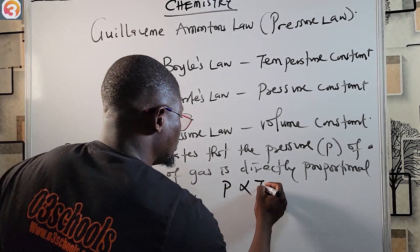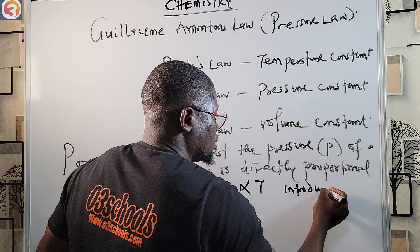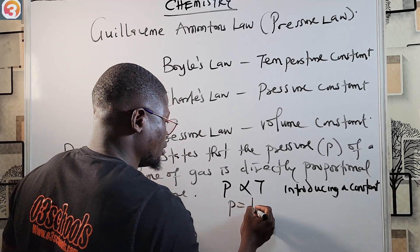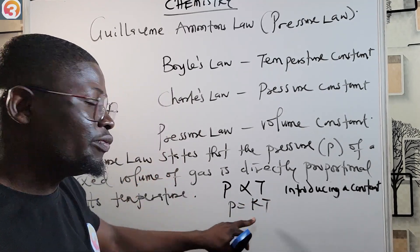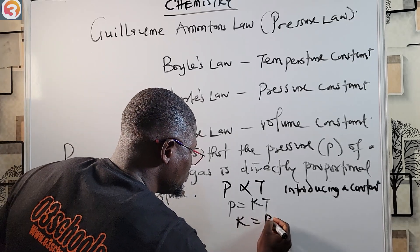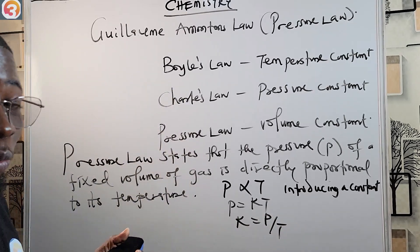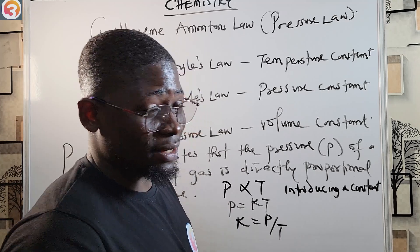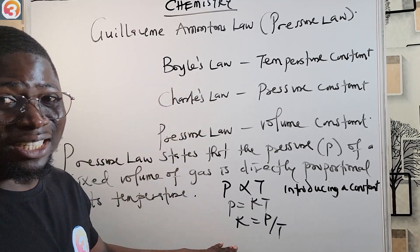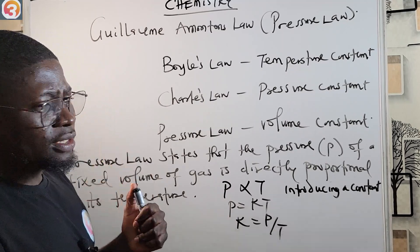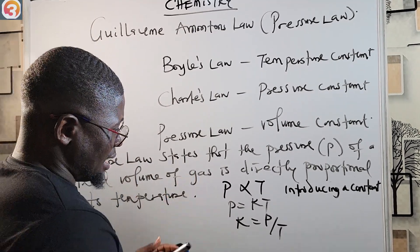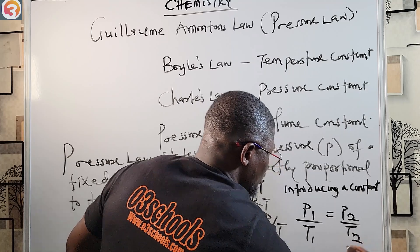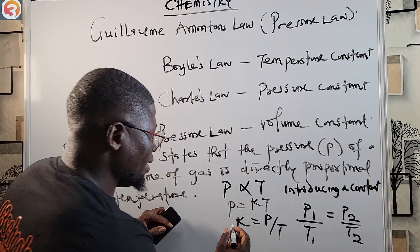Mathematically, pressure is directly proportional to temperature. Introducing a constant k, we get P = kT, which means P over T equals k — that is, P over T is always constant for a fixed volume of gas. This expands to P1 over T1 equals P2 over T2, which is very useful for calculations.